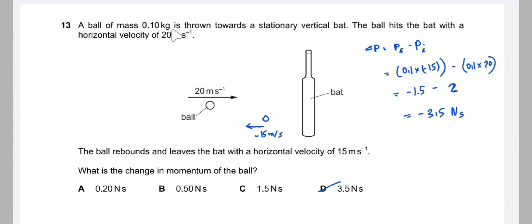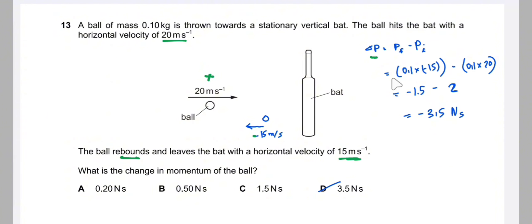Question 13: a ball of mass 0.1 kg is thrown toward a stationary bat. It hits with horizontal velocity 20 m/s and rebounds with 15 m/s (negative, since it reverses direction). Change in momentum = m·(v_final − v_initial) = 0.1 × (−15 − 20) = 0.1 × (−35) = −3.5 N·s. Taking the magnitude, the answer is D.